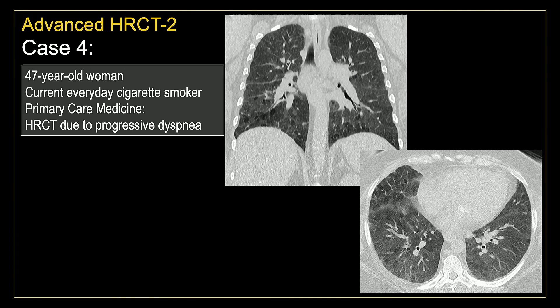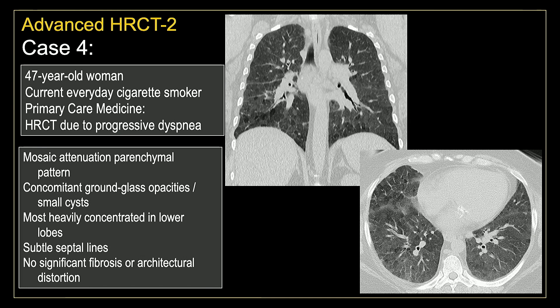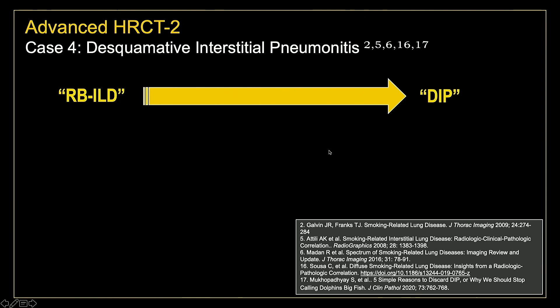Our fourth case is a 47-year-old woman, current everyday smoker, referred to us because she was having progressive dyspnea. Looking at her coronal and axial images, we see evidence of a mosaic attenuation parenchymal pattern most pronounced within the mid and lower lung zones. We see concomitant areas of cystic change within the lower lobes intermingled with these ground-glass opacities. There are some subtle septal lines, but we don't see significant fibrosis or architectural distortion. These imaging findings in this clinical setting are what we expect to see with desquamative interstitial pneumonia.